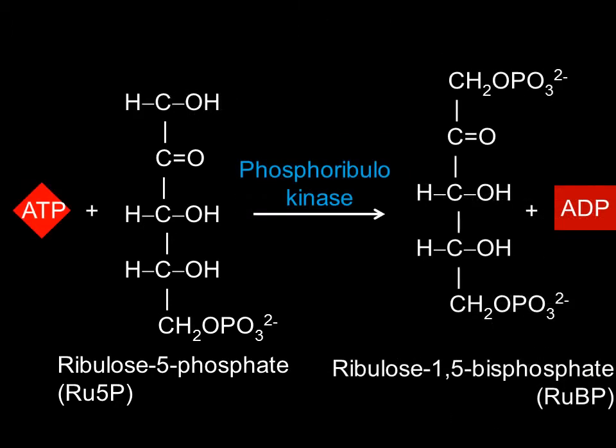The first reaction of the Calvin cycle is a conversion of ribulose-5-phosphate to ribulose-1,5-bisphosphate, utilizing the enzyme phosphoribulokinase.